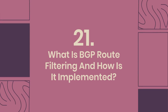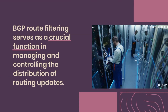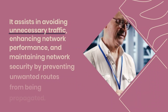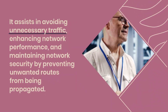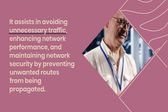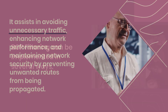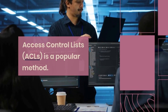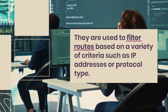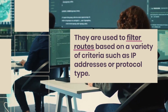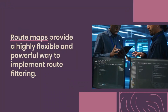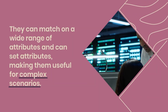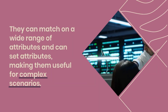What is BGP route filtering and how is it implemented? BGP route filtering manages and controls the distribution of routing updates, avoiding unnecessary traffic, enhancing performance, and maintaining security by preventing unwanted routes from being propagated. BGP filtering can be implemented in several ways. Access control lists (ACLs) filter routes based on criteria such as IP addresses or protocol type. Route maps provide a highly flexible and powerful way to implement route filtering — they can match on a wide range of attributes and set attributes, making them useful for complex scenarios.